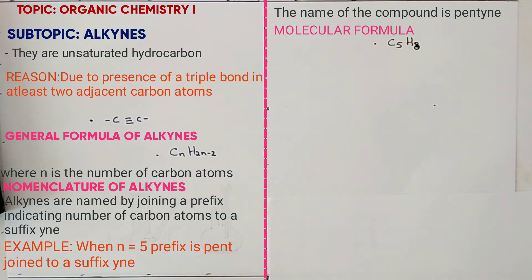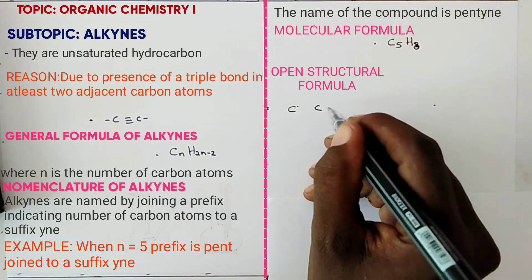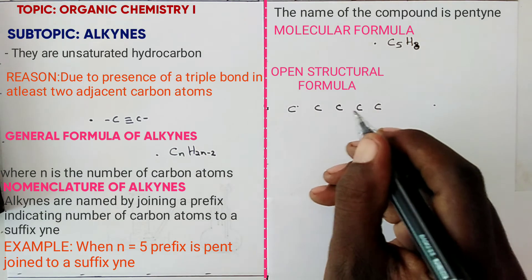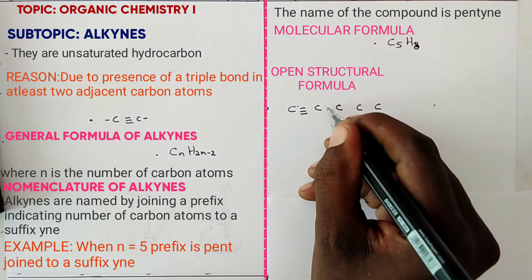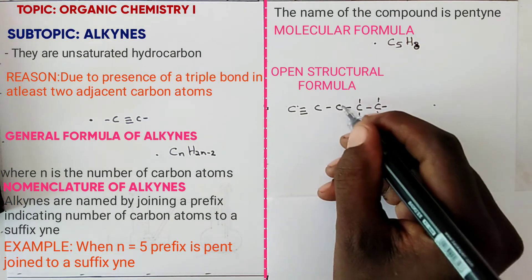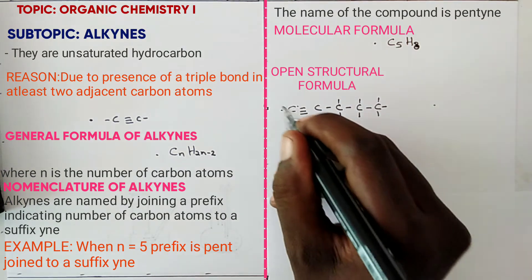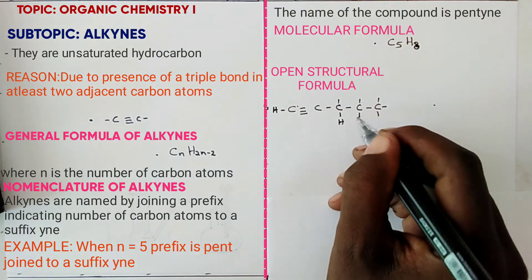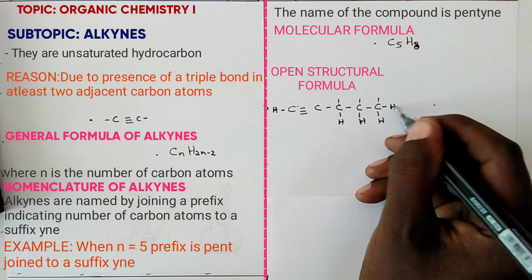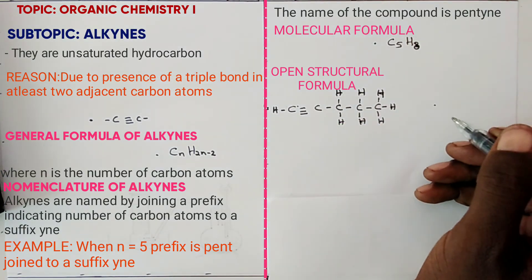Now the open structural formula for pentyne: you draw 5 carbon atoms and place a triple bond between at least 2 adjacent carbon atoms. The rest become single bonds. Then you make each carbon have 4 bonds total, placing hydrogen atoms in each remaining bond position. That is called the open structural formula.